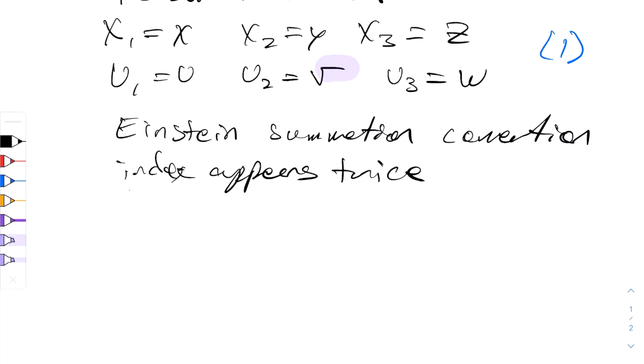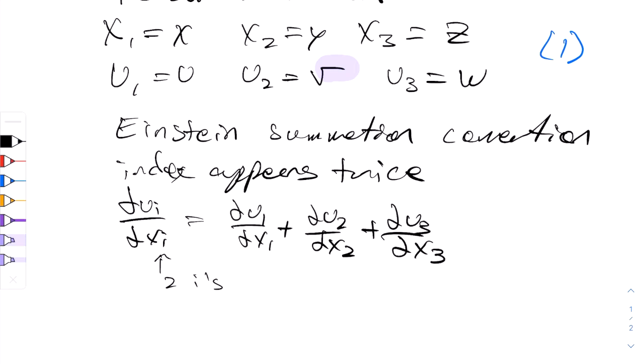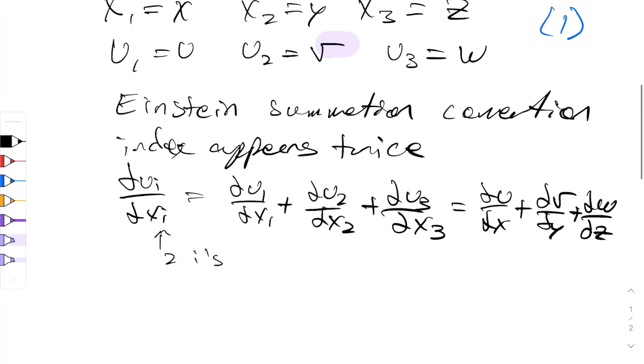Let's look at two examples. The first one might be the term partial ui partial xi. And you'll see we have two i's. What would that be? That would be partial u1 partial x1 plus partial u2 partial x2 plus partial u3 partial x3. That would be written using equation 1 as partial u partial x plus partial v partial y plus partial w partial z. Let's call this equation 2.